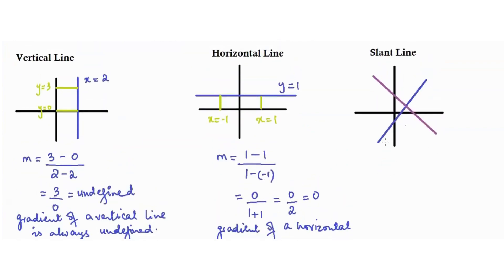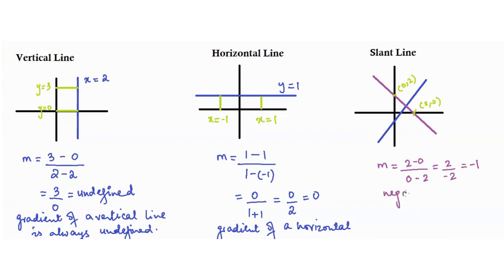Moving on to slant lines. Looking at the purple line, as x increases, y decreases. Taking points (0, 2) and (2, 0), the gradient is 2 minus 0 over 0 minus 2, which is 2 over negative 2, equaling negative 1. So the purple line has a negative slope because as one value increases, the other decreases.